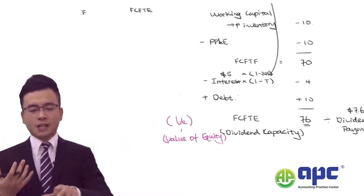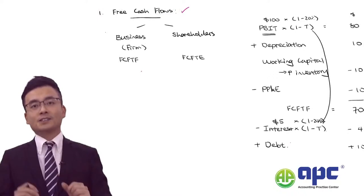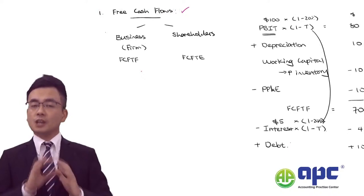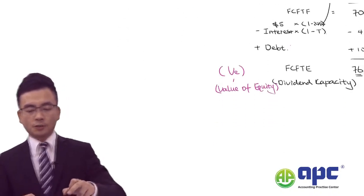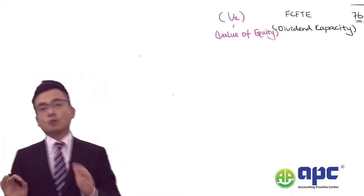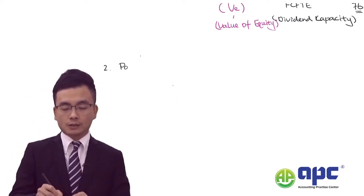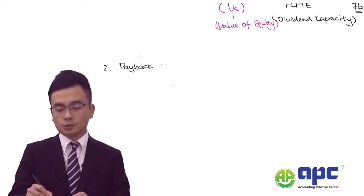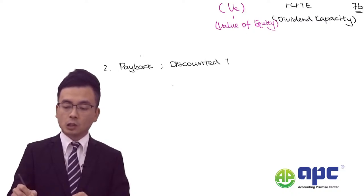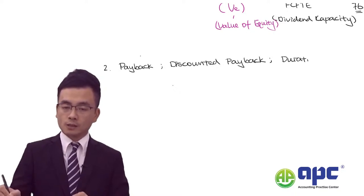After recapping the free cash flow methodology, let's revise the mixture of areas — firstly the concept of payback period, discounted payback period, and finally the duration concept. To calculate payback and discounted payback, I always lay out three columns: number of years of the project, cash flows (or present values for discounted payback), and cumulative cash flows or present values.